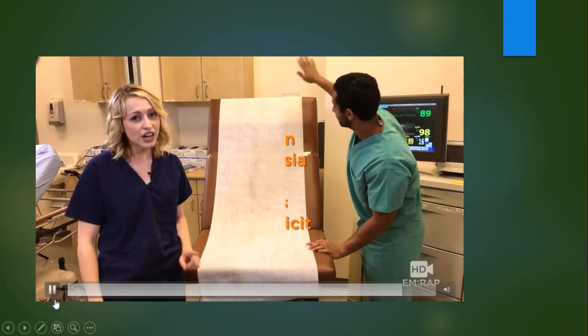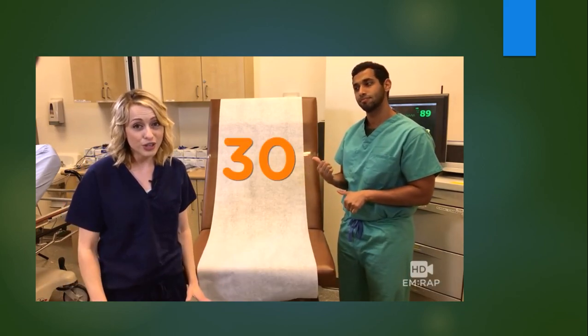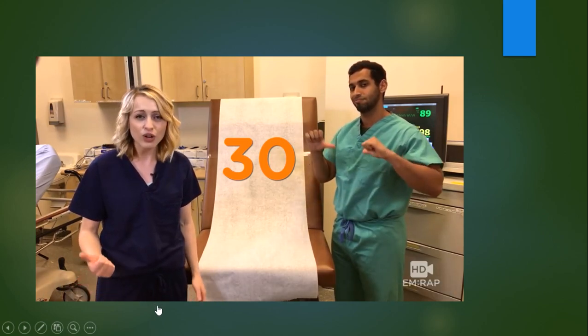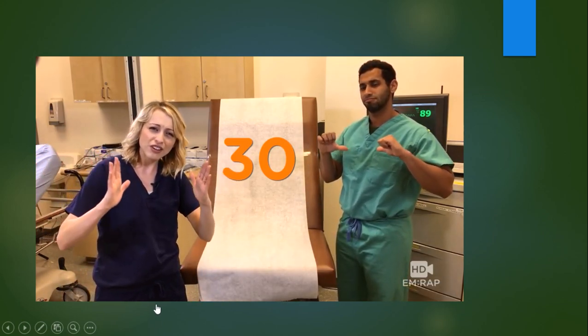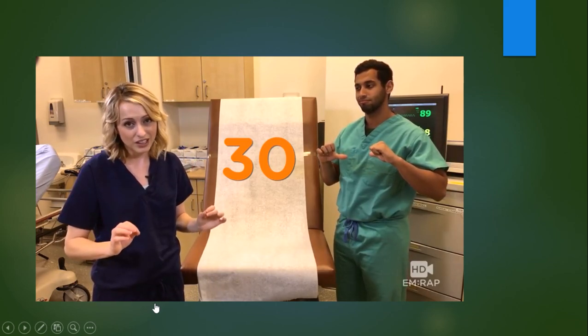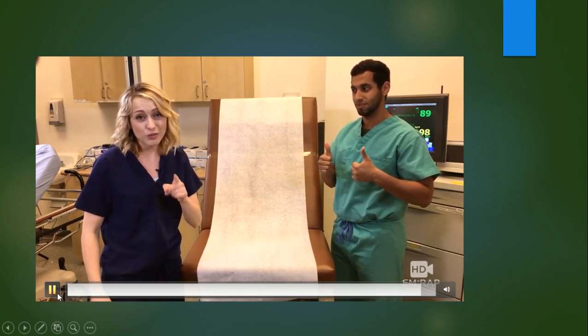The other thing that you gotta remember is the number 30. That's 30 millimeters of mercury. A compartment pressure above 30 is very concerning. Or if that delta pressure narrows down so it's less than 30, then that's also really bad. Okay, we got this, right? We got it. Now you know what to do when you're under pressure.